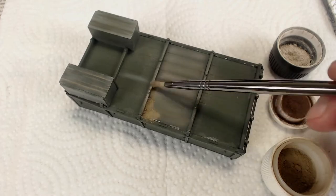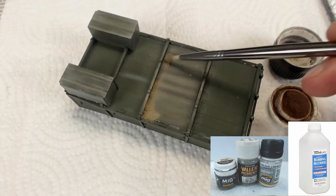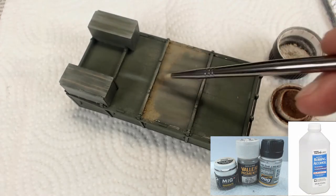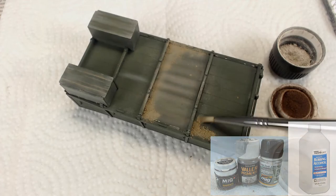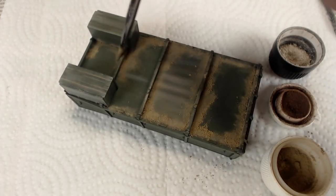Our final steps included muddying up the vehicle's bottom with pigment powder fixed with alcohol. We covered this process in more detail in other build videos so we'll fast motion through it here.